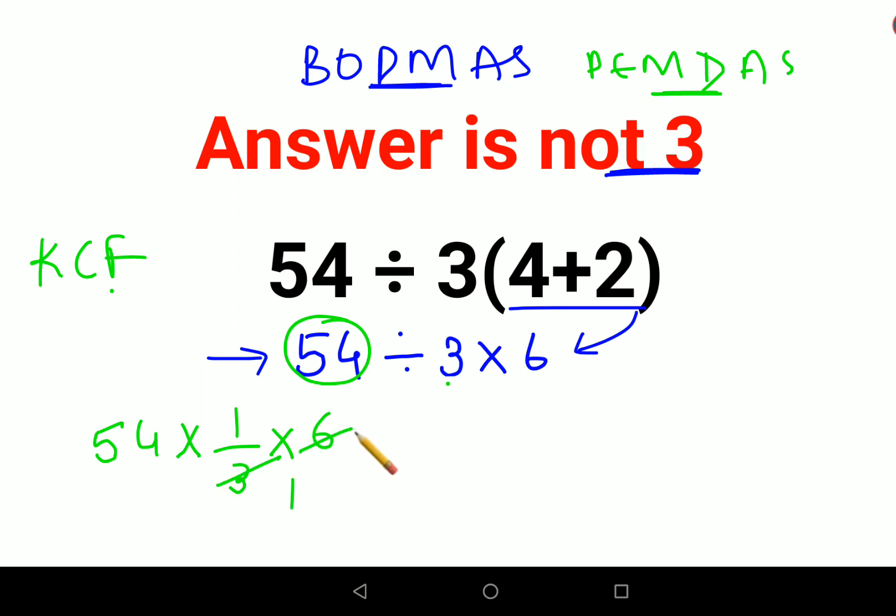You can cancel with 3 or with 6 or with 54, whatever works for you. Then we have just left with 54 into 2, that gets you 108.